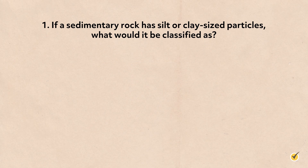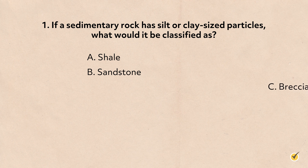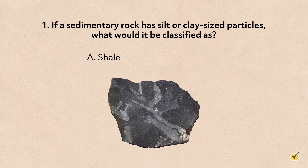Now that you know everything there is to know about sedimentary, metamorphic, and igneous rocks, let's go over a couple of review questions. Number one: if a sedimentary rock has silt or clay-sized particles, what would it be classified as? A, shale; B, sandstone; C, breccia. The correct answer is A, shale. Shale is defined as a fine-grained, detrital, sedimentary rock.